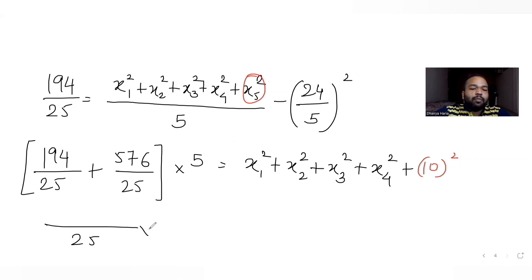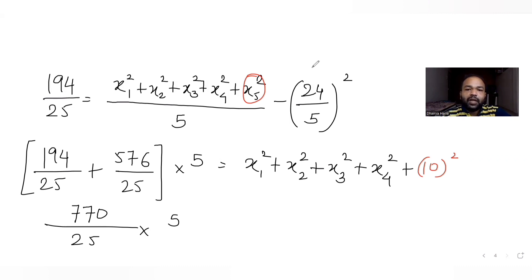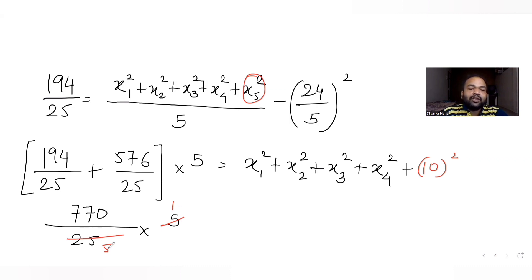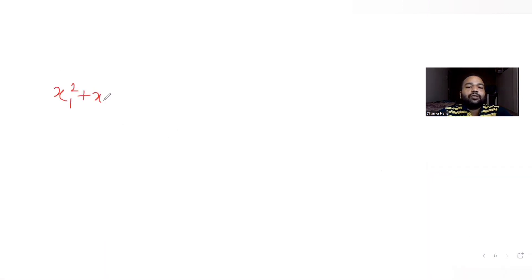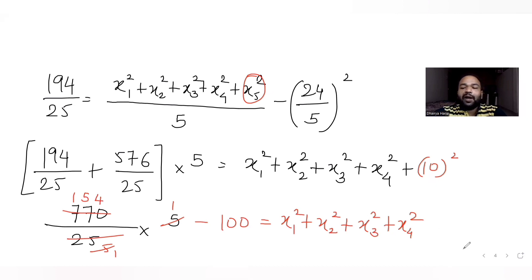We have 25 in the denominator, multiplied by 5. So 576 plus 194 is 770, divided by 5 gives 154. Then subtracting x5 squared, which is 10 squared equals 100, we get the sum of squares of the first 4 observations as 154 minus 100, which is 54.